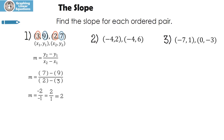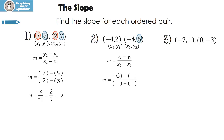Let's look at number 2. I labeled the points and here's my formula. Here's y2, y1, x2, and x1. Six minus two is four, and negative four minus a negative four is zero. We can't divide by zero, so that means this is an undefined slope.